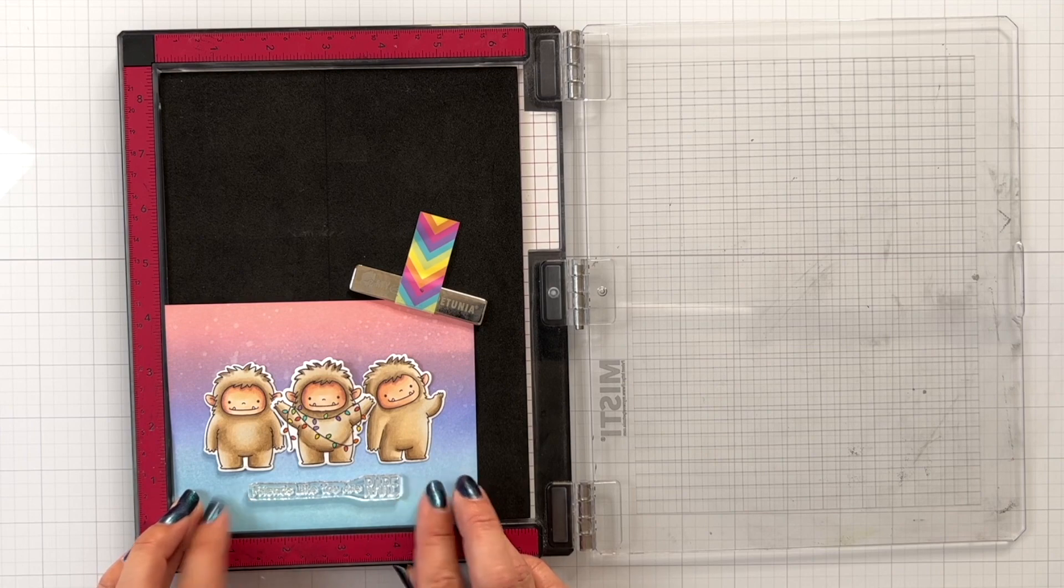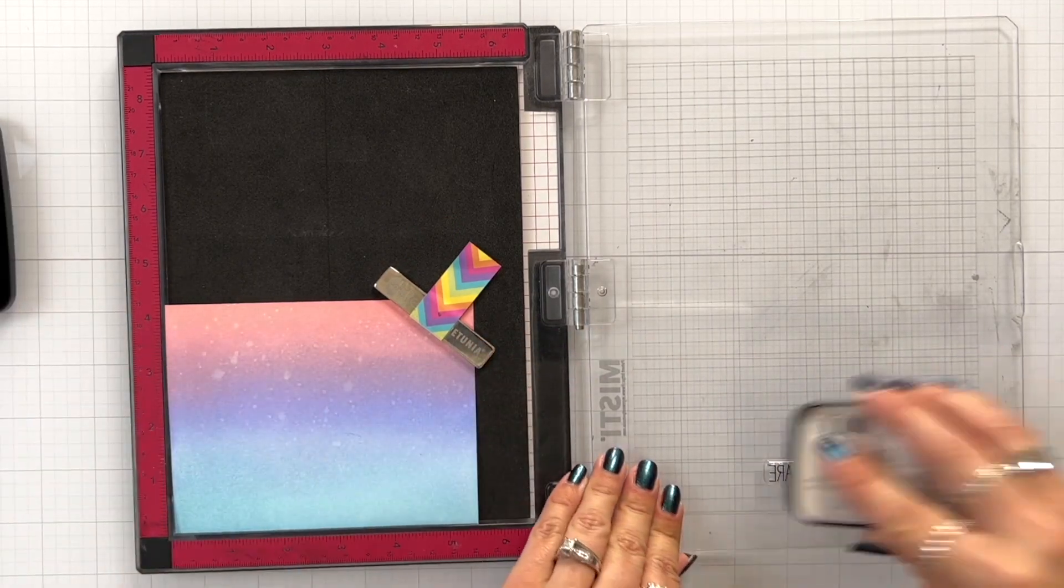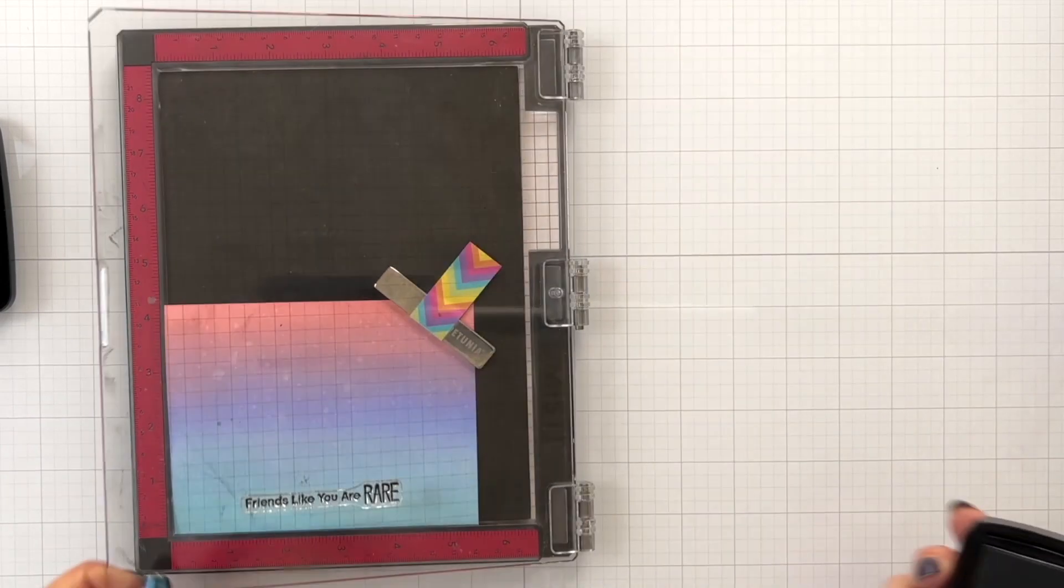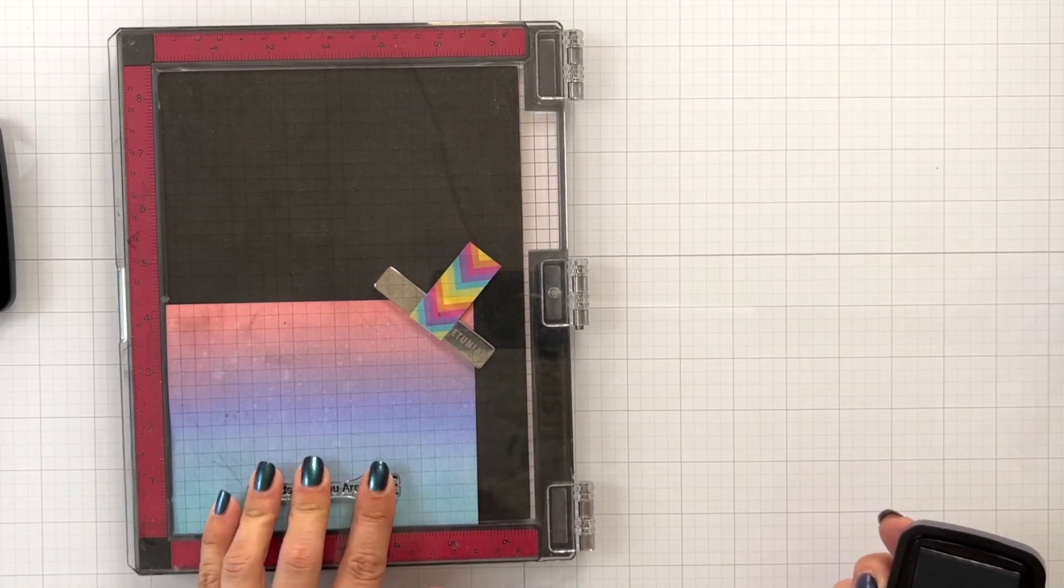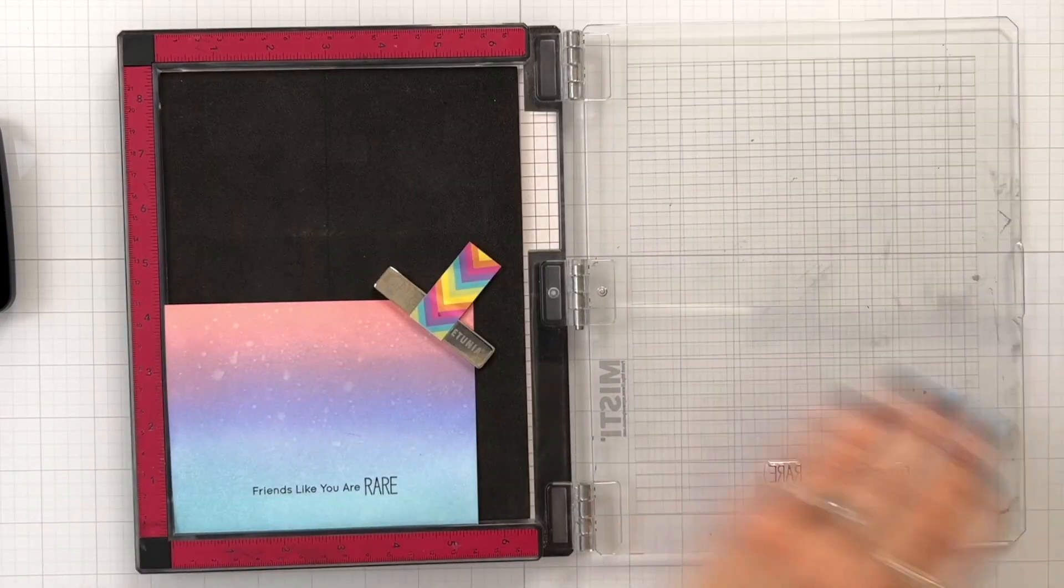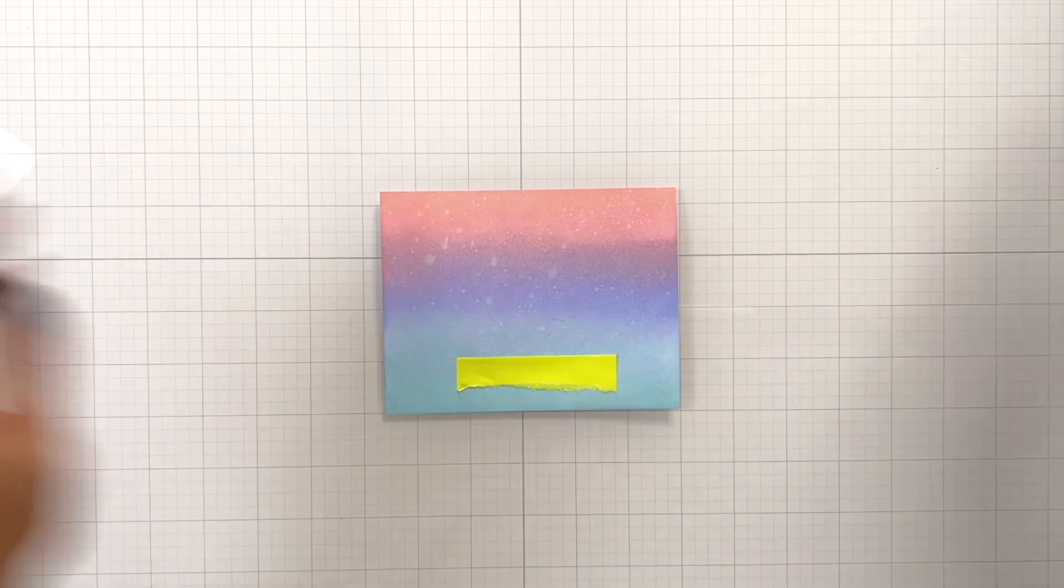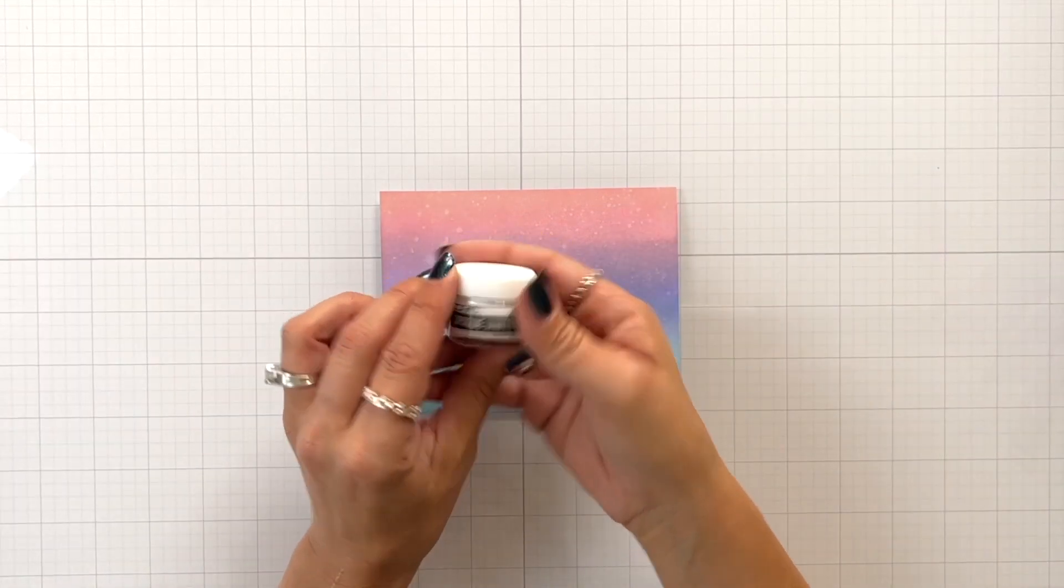And then I'm going to dry this because before I do any other splattering, I want to get my sentiment on the front of the card. So I place this in my MISTI tool, I put my characters where they were going to be so I knew exactly where my sentiment was going to go, and then I'm stamping this in a VersaFine ink because normally I can get it done and perfect in one shot and it's really great for stamping on top of oxides.